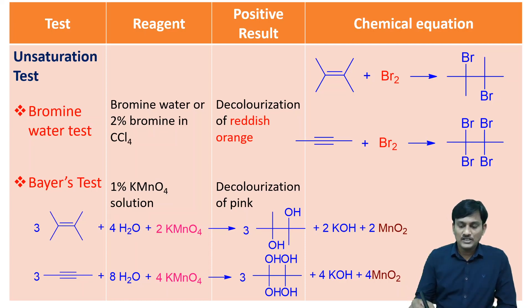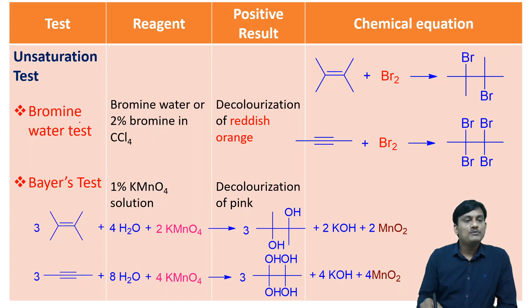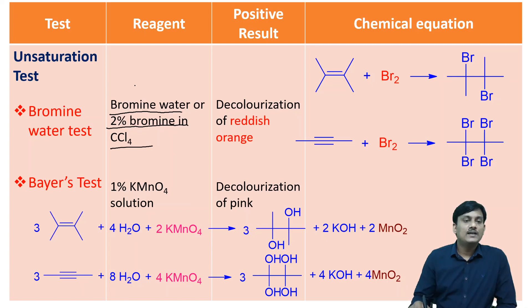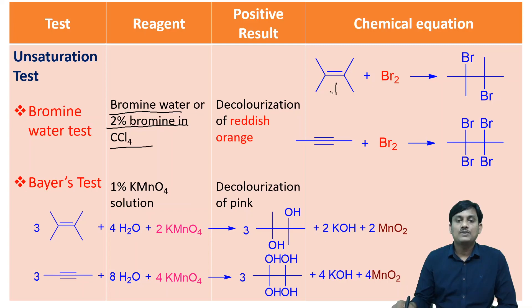Let us take unsaturated compounds. The unsaturation test can be done by using the Bromine water test or Baeyer's test. In the Bromine water test, the reagent is Bromine water, or 2% Bromine dissolved in carbon tetrachloride. The color of this solution is reddish orange. When you treat this reddish orange solution with alkene, there is a formation of 1,2-dibromoalkane, and the solution becomes colorless.